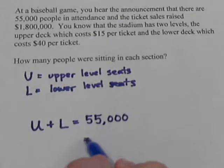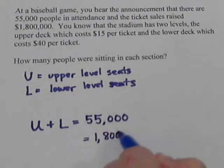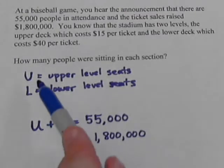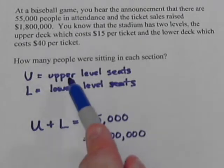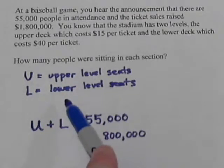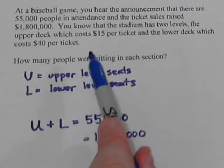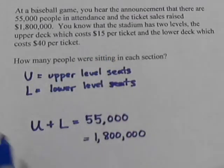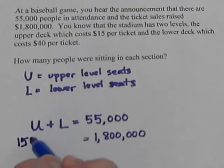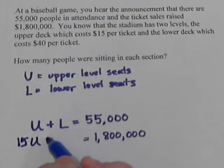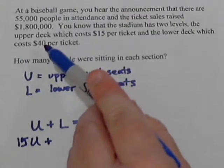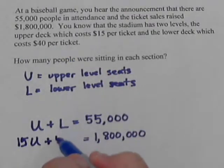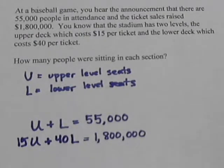We also know that $1,800,000 was made off of ticket sales. That came from the money made in the upper level and the money made in the lower level. Each upper level seat cost $15, so 15 times U, and the lower level was $40 each, so 40 times L. Those two added together give us 1,800,000.